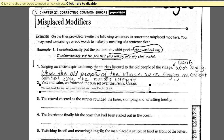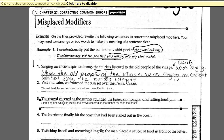Here's a different example of that modifier coming at the end with its comma: 'The crowd cheered as the runner rounded the bases, stomping and whistling loudly.' Could the runner be stomping and whistling loudly? Likely no. So we need to change it to make sure that 'stomping and whistling loudly' is modifying the crowd and not the runner. We move it closest to the object we want to modify: 'Stomping and whistling loudly, the crowd cheered.'